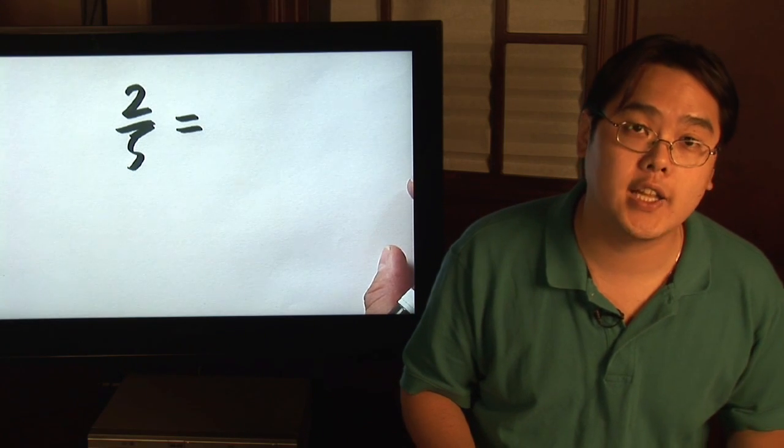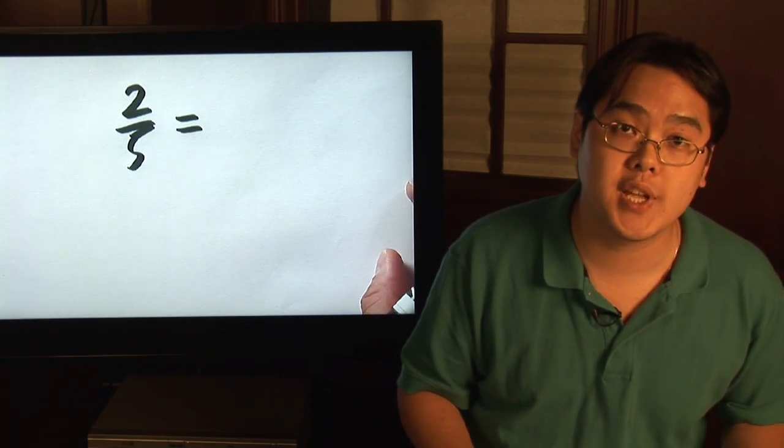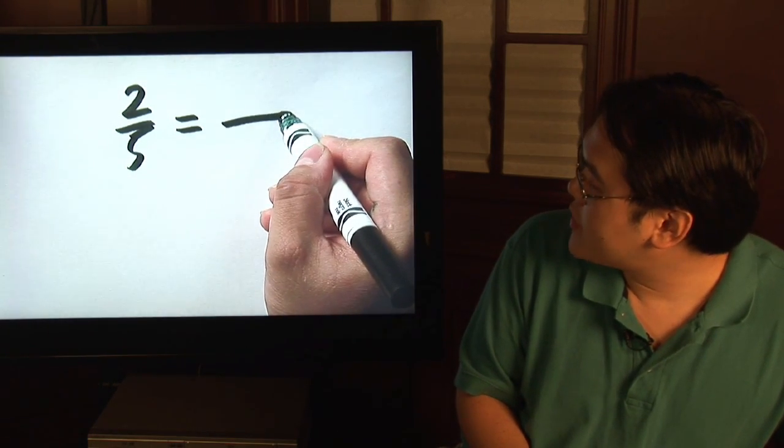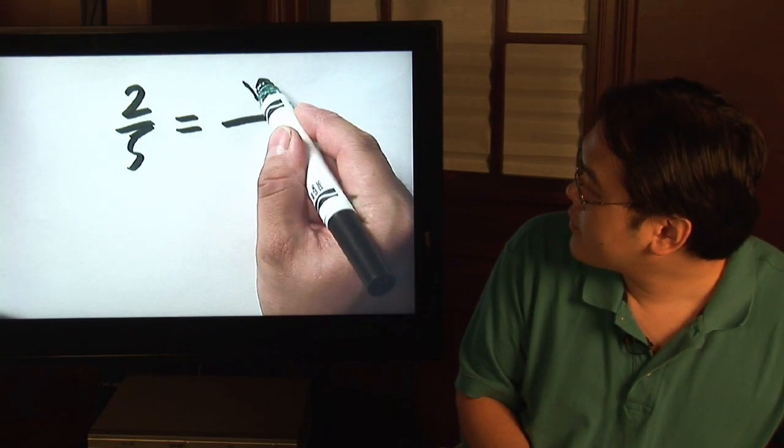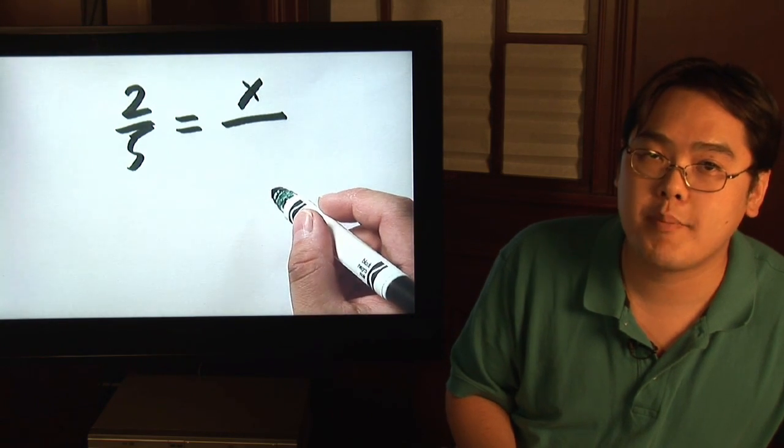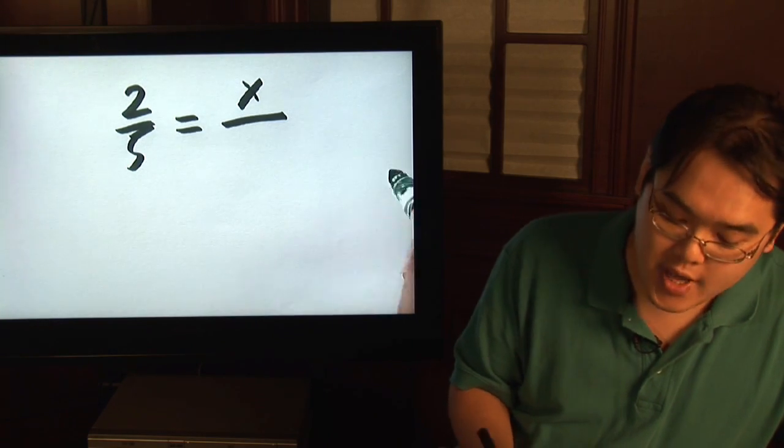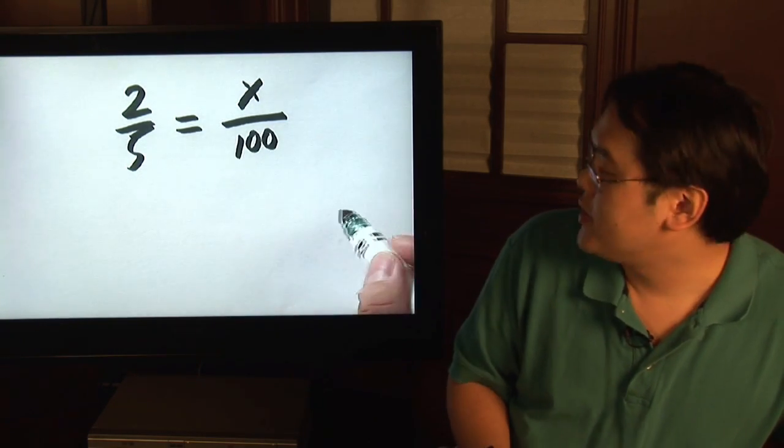Because we don't know exactly what two fifths is in terms of percent, here's how the other side will work. Since we don't know what percentage two fifths is, we're going to call the top number, the numerator, x. Because the maximum number you should have for a percent is 100, that will be the denominator.